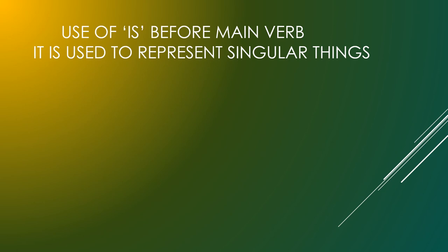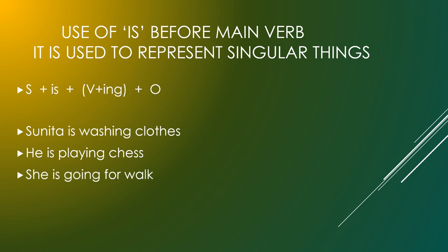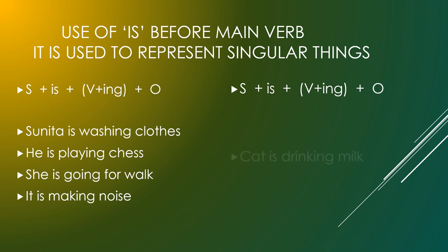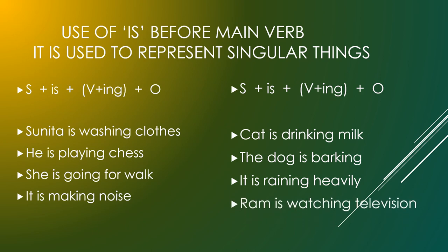Use of is before main verb — it is used to represent singular things, एक वचन के लिए. Subject + is + verb with -ing + object. Sunita is washing clothes. He is playing chess. She is going for walk. It is making noise. Cat is drinking milk. The dog is barking. It is raining heavily. Ram is watching television. इन सब sentences में क्रिया चल रही है.